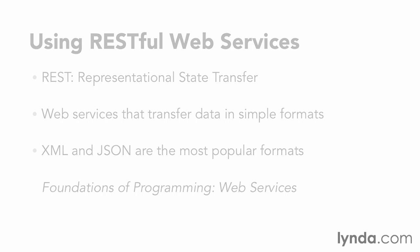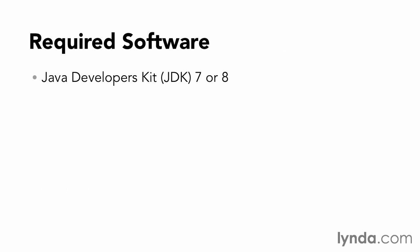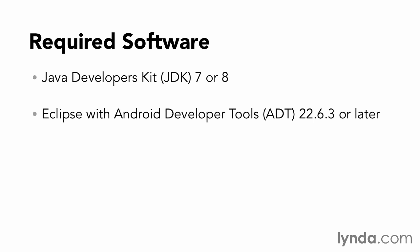To work through the demonstrations in this course, you'll need to install some software. You'll need the Java Developers Kit, or JDK. Either version 7 or version 8 will do. You won't be able to use Java 6, because some of the code uses syntax that was introduced in Java 7. This course uses Eclipse with the Android Developer Tools, or ADT. You'll need version 22.6.3 or later.